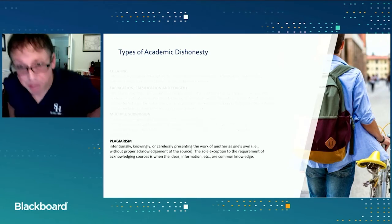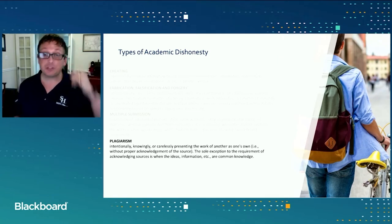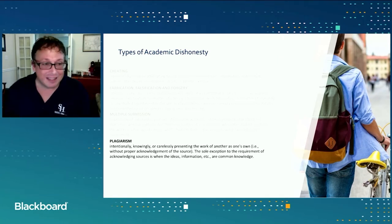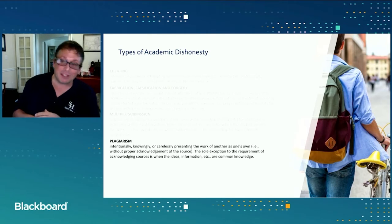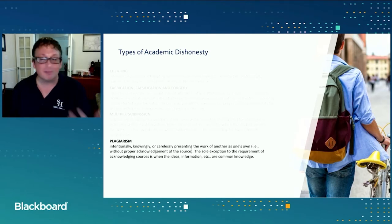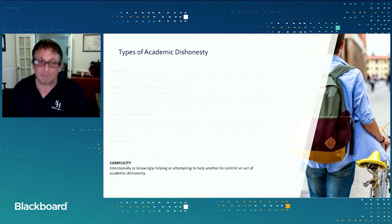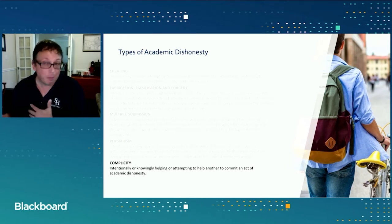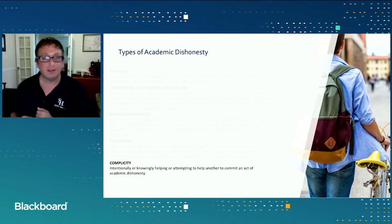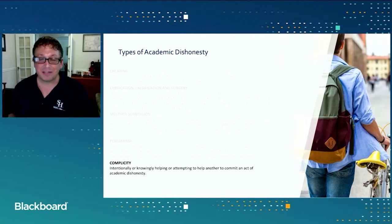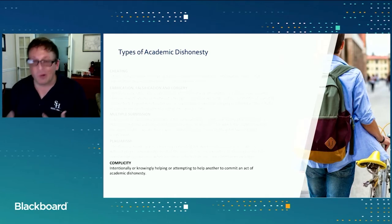Then we have plagiarism — using someone else's work as your own. And lastly, complicity: being involved in or knowingly attempting to help someone else cheat. Imagine a student standing just off camera in an online testing environment trying to read out the answers to a colleague. So those are the main types of academic dishonesty.